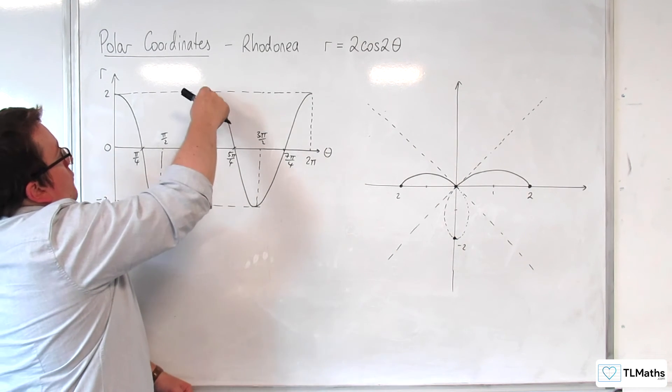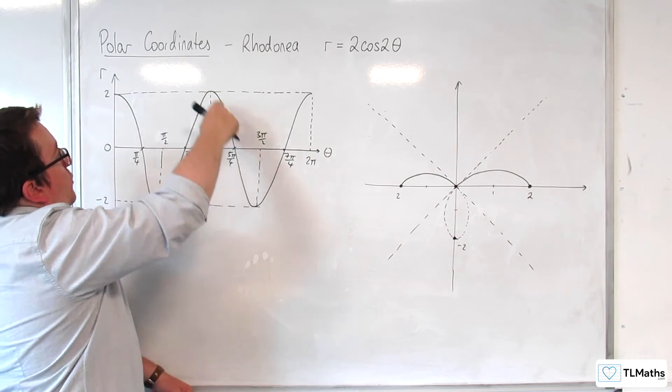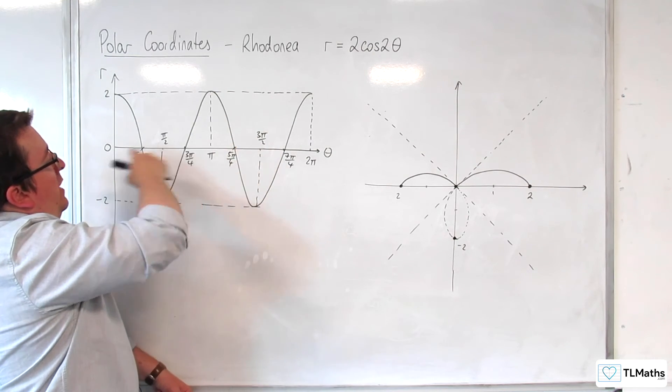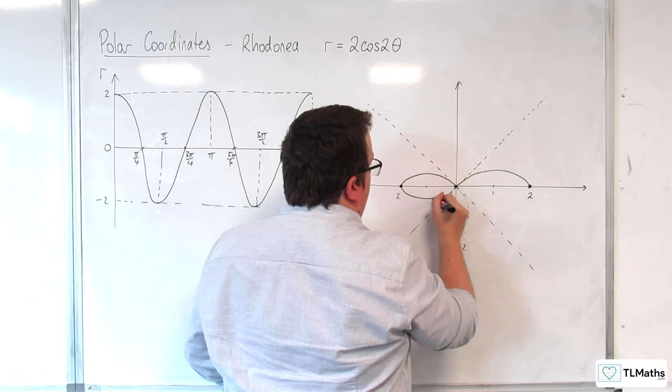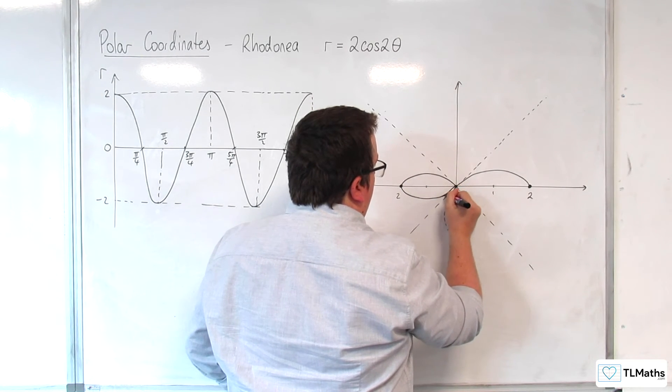Then, from pi to 5 pi over 4, r is positive. We're getting back to 0. And so we come back round here, like that.